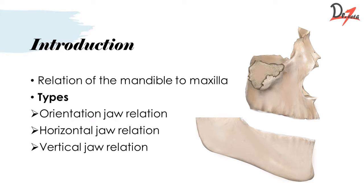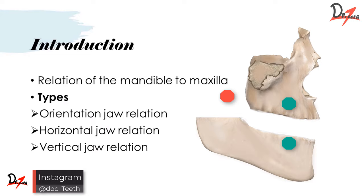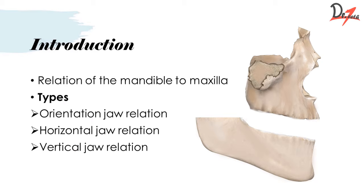Before going any further, we need to understand the importance of jaw relation. When you are replacing maxillary and mandibular teeth, you need to replace them in harmony with the TMJ joint, so that there is no discomfort. If you are not rehabilitating your mandibular and maxillary teeth in harmony, it will cause discomfort. Maxilla and mandible are related horizontally and vertically, and you have to orient them in both planes, along with orientation jaw relation.